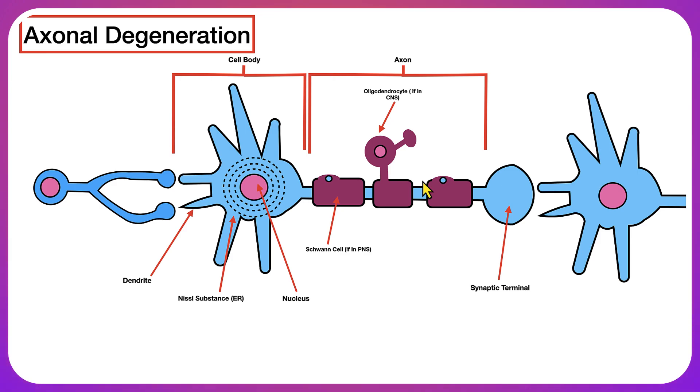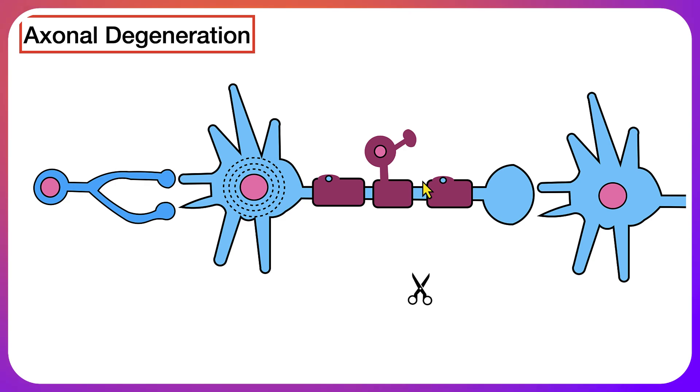These are all the important parts of the figure that we're going to talk about today. Now that we know the different parts of this figure, let's talk about how axonal degeneration occurs. Let's just say that the middle neuron sustains an injury, and this injury separates the synaptic terminal and part of the axon from the rest of the cell. What is going to happen to this neuron?